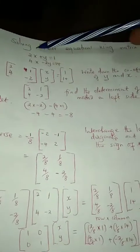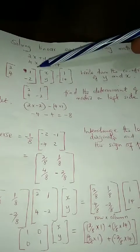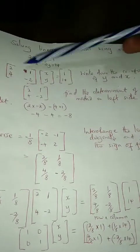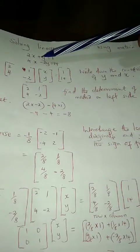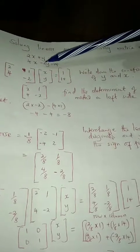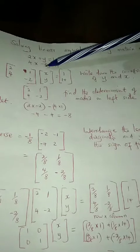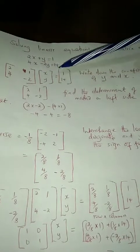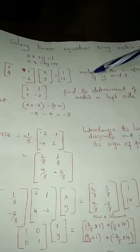So the first step: you will have to write down the coefficients, these values that are before x and y. You write them like 2, 4. Before y here we have 1, and then before 2y here we have negative 2. And then you write x, y going down and then you write the other side.